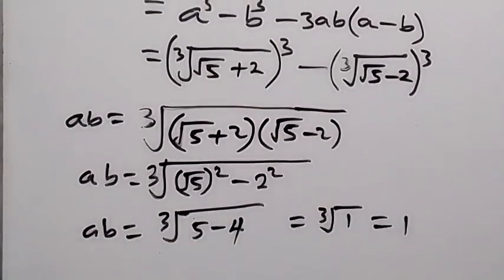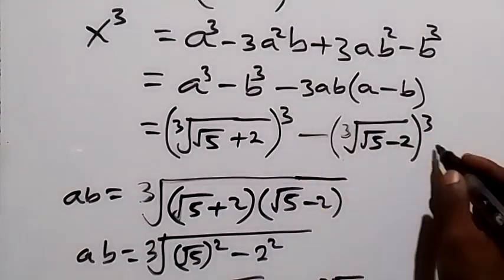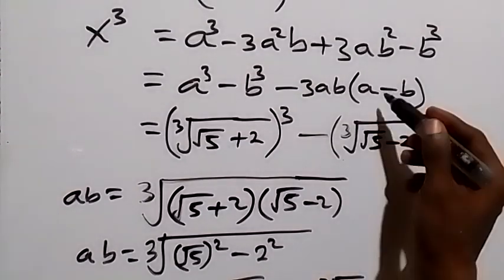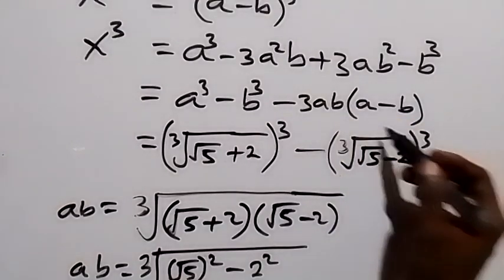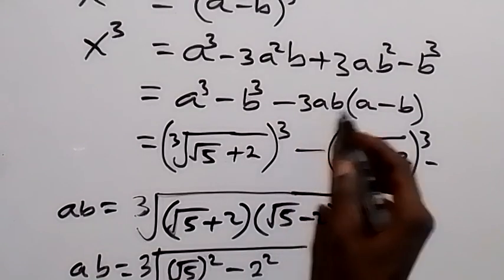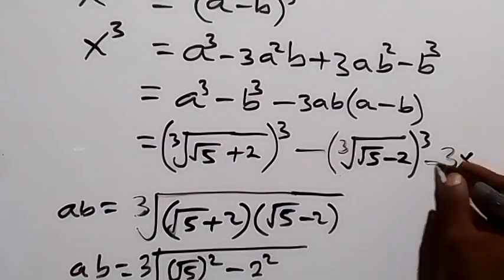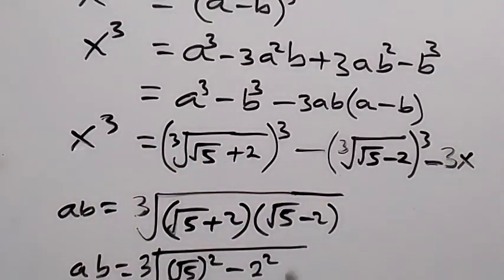Substituting ab = 1, we have minus 3 times 1, which is minus 3, times (a − b). Since a − b equals x, this becomes minus 3x. So x³ equals (a³ − b³) minus 3x.